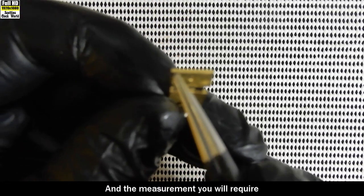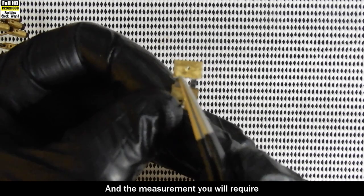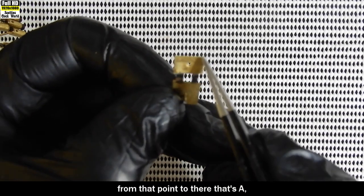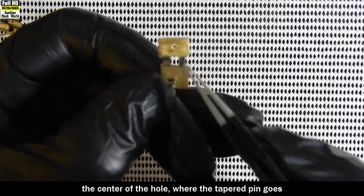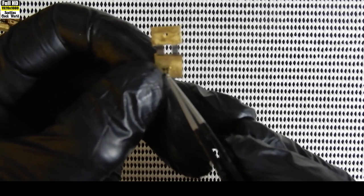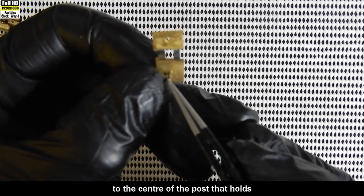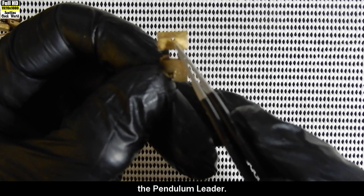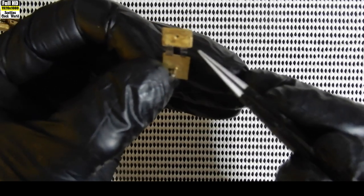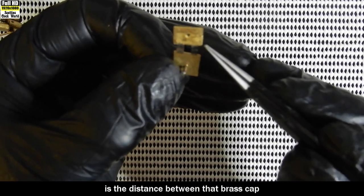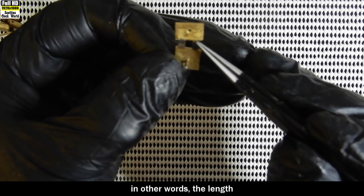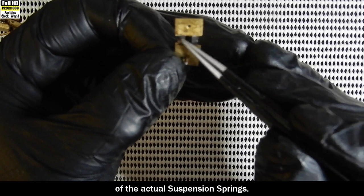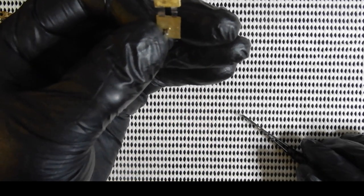And the measurement you will require from that point to there, that's A. B, the center of the hole where the tapered pin goes to the center of the post that holds the pendulum leader. Third measurement is the distance between that brass cap and the brass bottom. In other words, the length of the actual suspension spring.